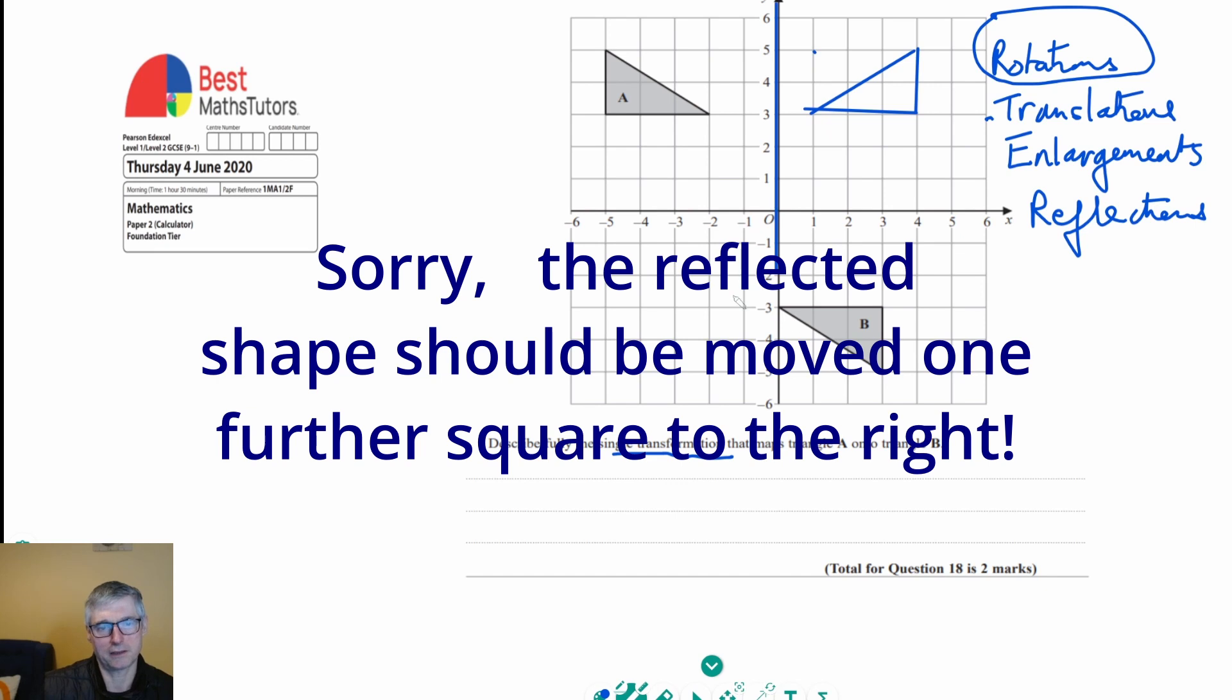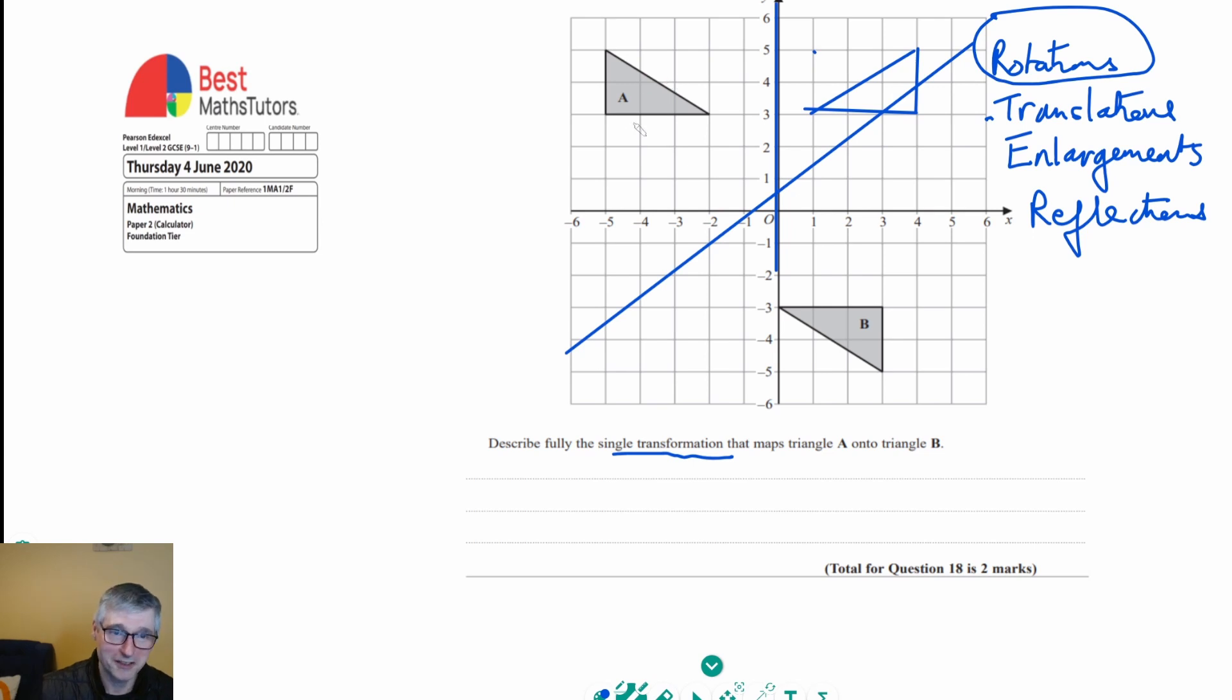Now, it might look a little bit like it's a reflection, maybe potentially if I draw a line like that. But as we can see, even if we draw a diagonal line, it wouldn't be this way up. So it's not a reflection either. So it's none of those.